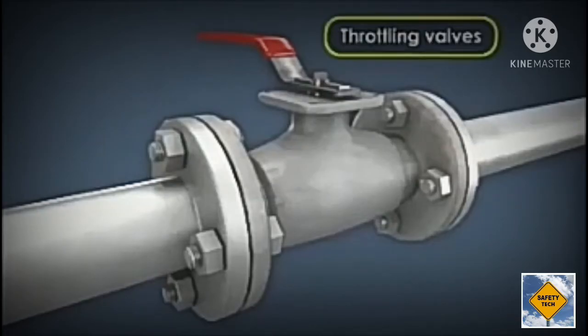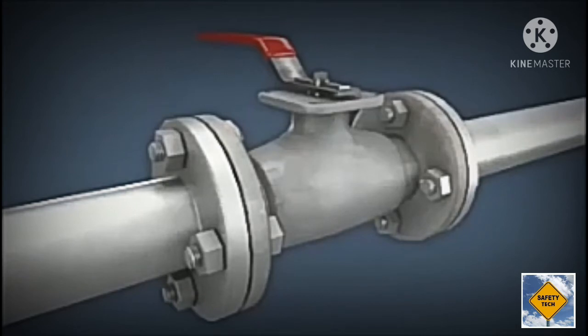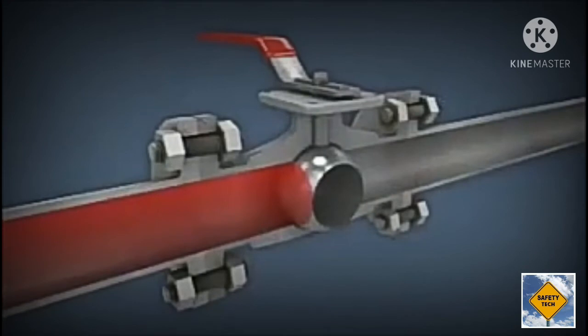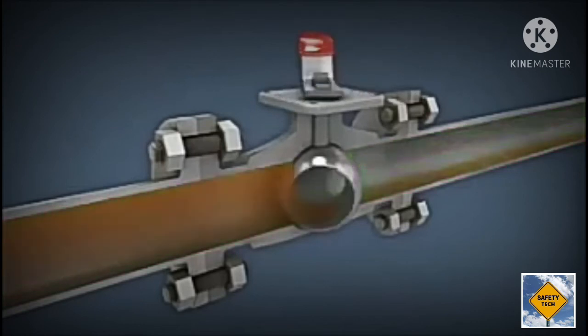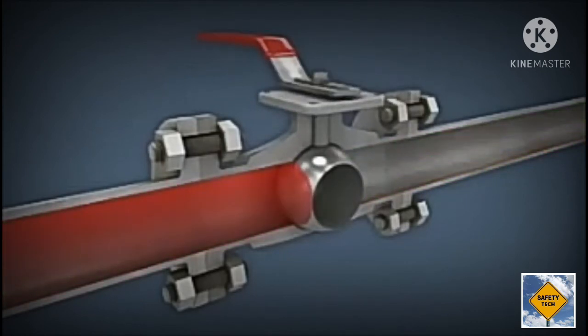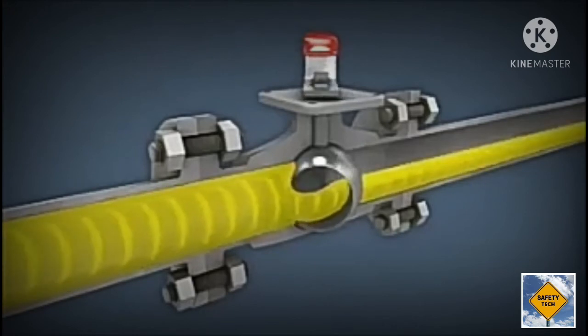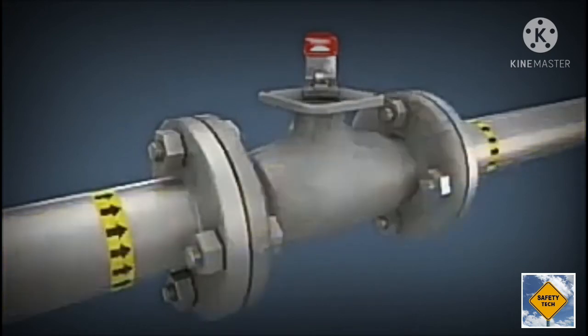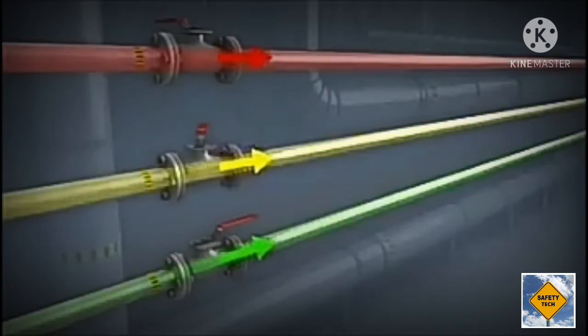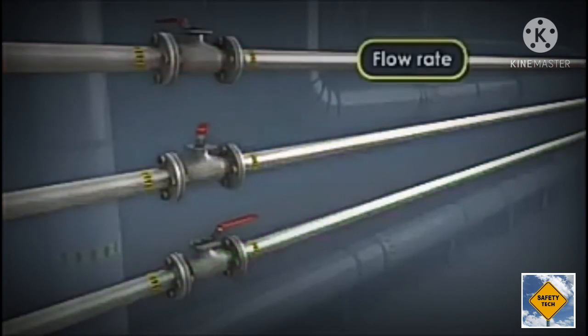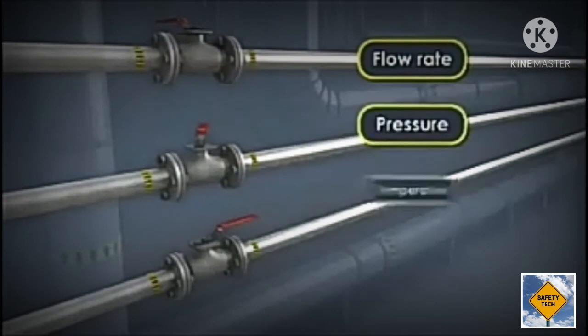Throttling valves are used to regulate the amount of fluid that passes through the valve. Like an on-off valve, a throttling valve can be fully open to allow maximum flow or fully closed to stop flow, but a throttling valve can also be partially open to let some of the fluid pass through. Throttling valves can be used to control downstream conditions including the flow rate, pressure, or temperature.